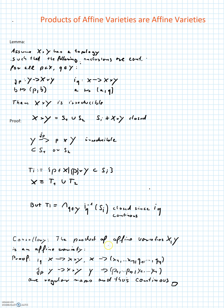Now to prove that the product of affine varieties X, Y is an affine variety, we just have to apply this lemma. For every q in Y let the map i(q) be the following map as you can see here, and similarly for every p in X we define the map j(p), and both of these maps are regular maps and are thus continuous, and so the statement follows from the lemma. This concludes this mini lecture — thank you for watching, see you next time.